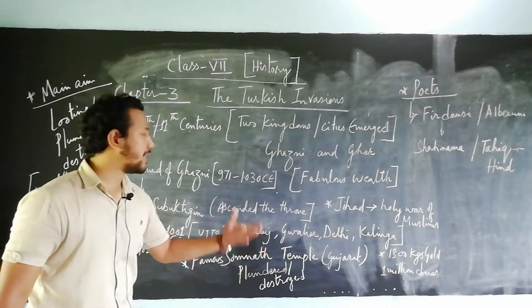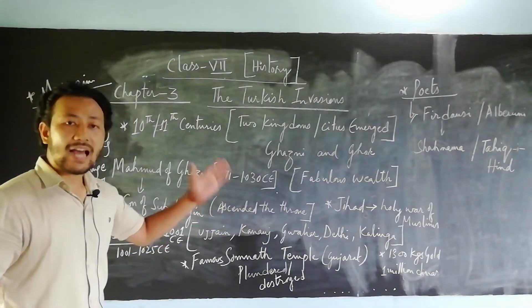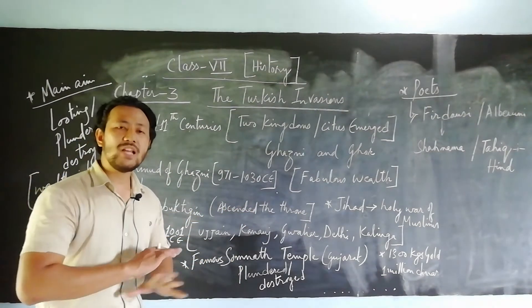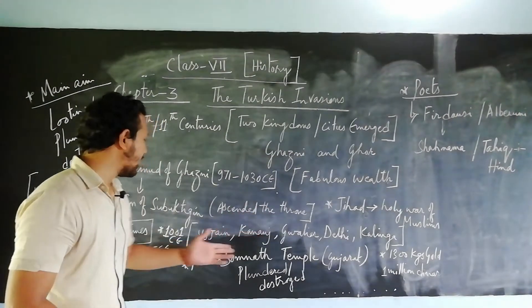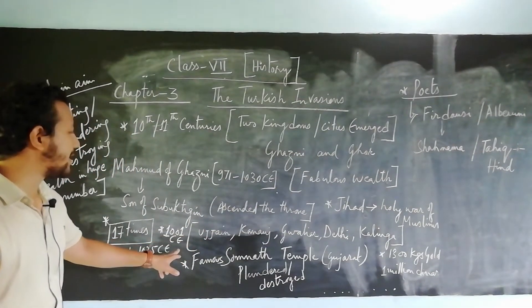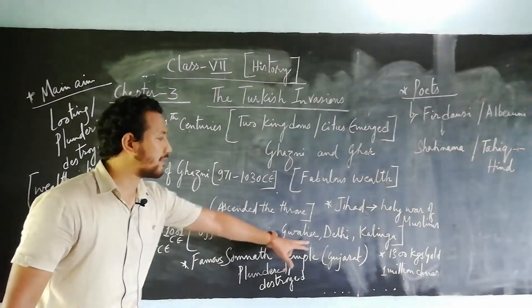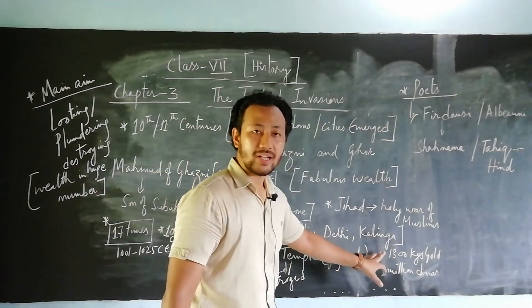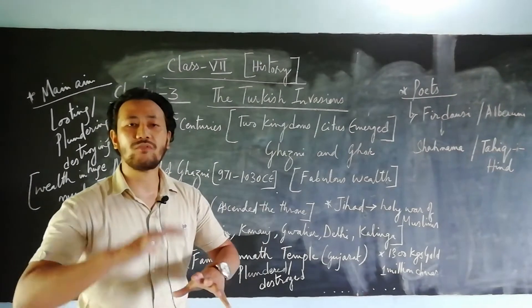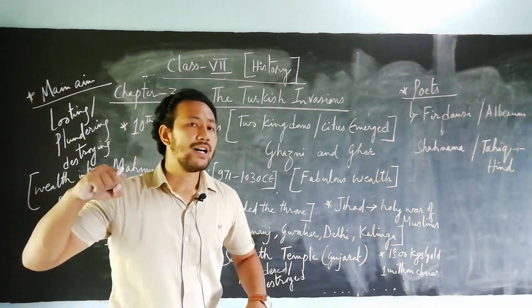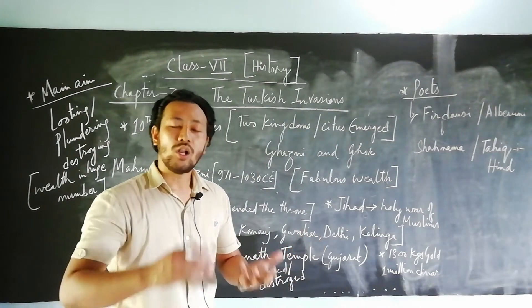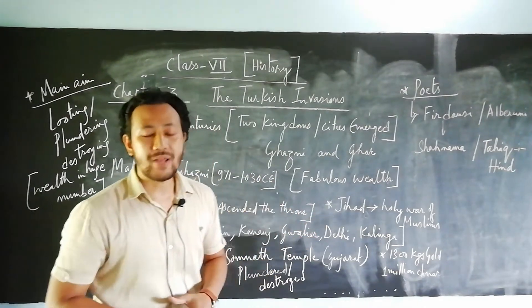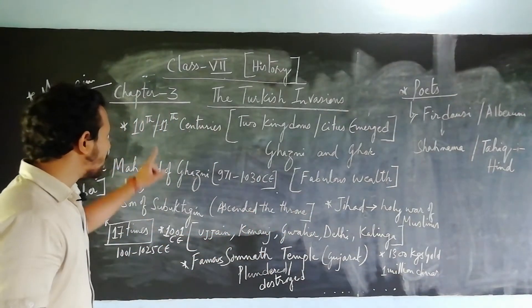Mohammed of Ghazni came to India in 971 CE and after that, coming 17 times, he plundered and destroyed many Indian cities. In the year 1001 CE, he plundered five cities: Ujjain, Kanauj, Mathura, Delhi, and Kalinga. These were the most important centers of India which were crushed by Mohammed of Ghazni in order to take wealth and huge amounts of booty.